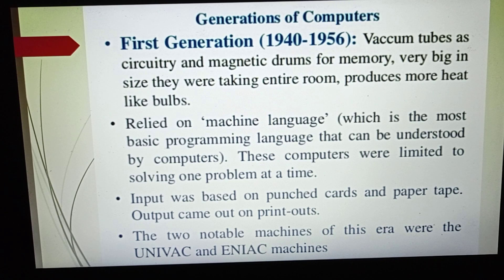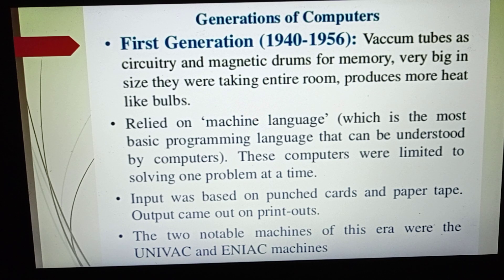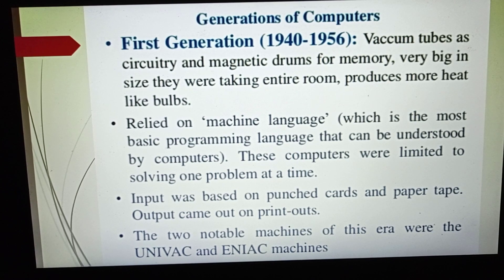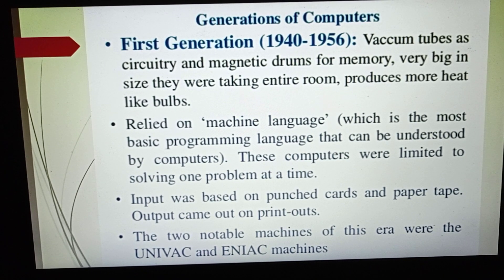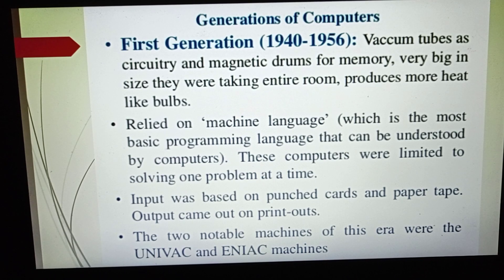In this generation, the two notable machines are UNIVAC and ENIAC — that is Universal Automatic Computer and Electronic Numerical Integrator and Computer. This ENIAC used 18,000 vacuum tubes.